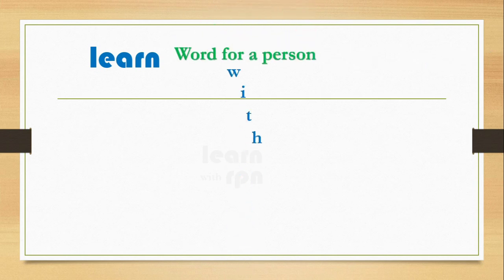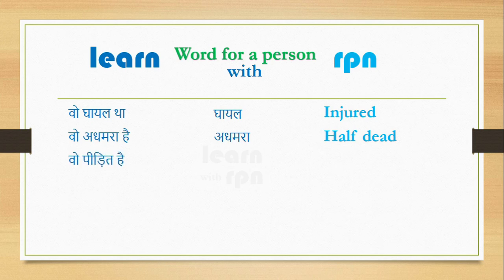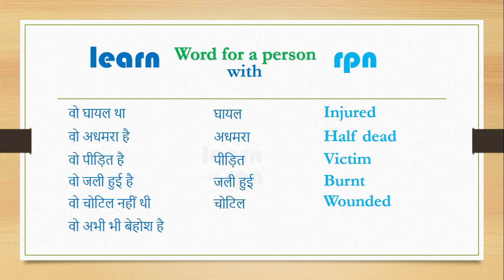Now let's go to the next section for words describing a person. Woh ghayal tha — He was injured. Woh adhmara hai — He is half dead. Woh peedit hai — He is a victim. Woh jali hui hai — She is burnt. Woh chotil nahi thi — She was not wounded. Woh abhi bhi behosh hai — He is still unconscious. Guys, can you please speak these Hindi lines in English?